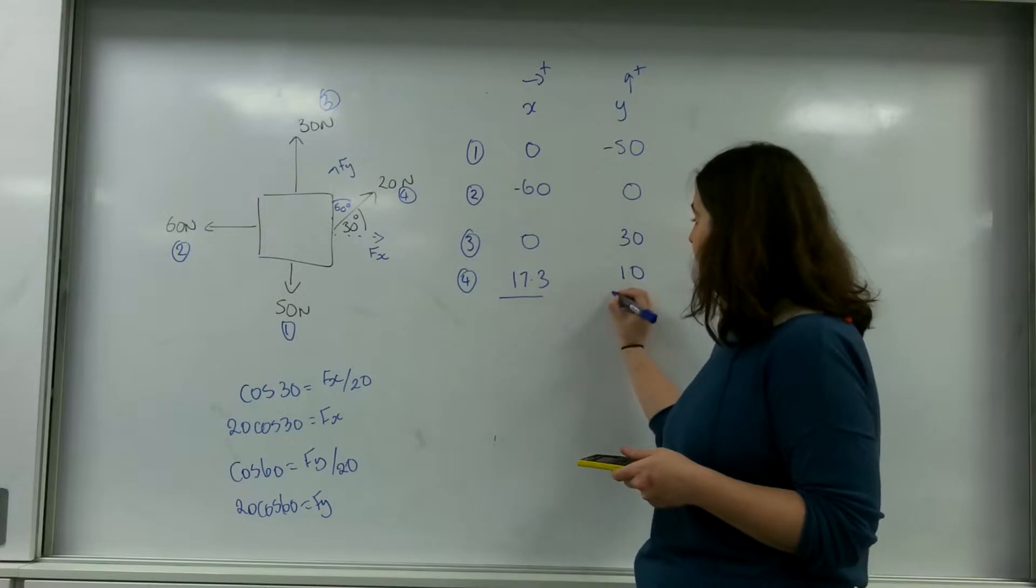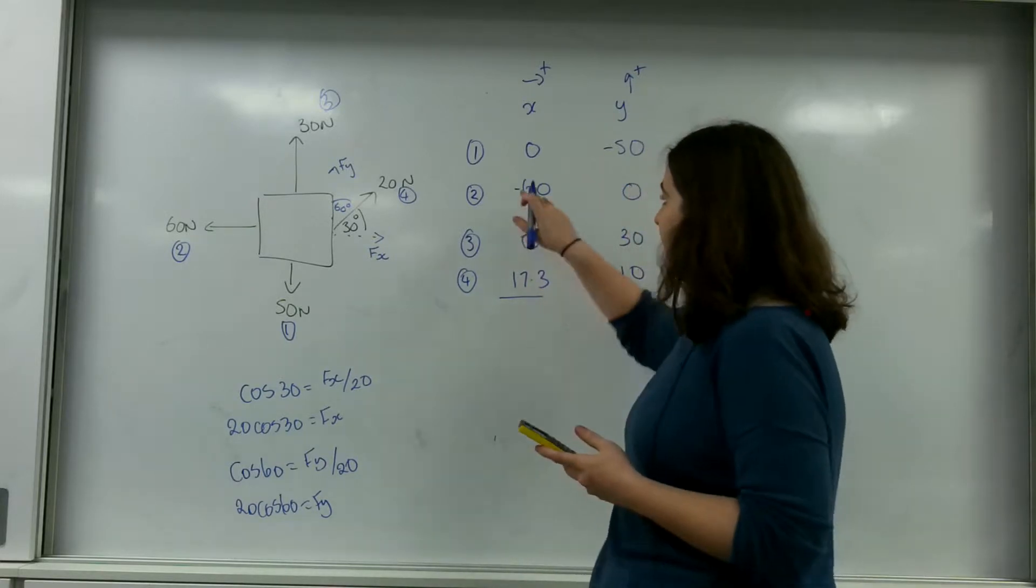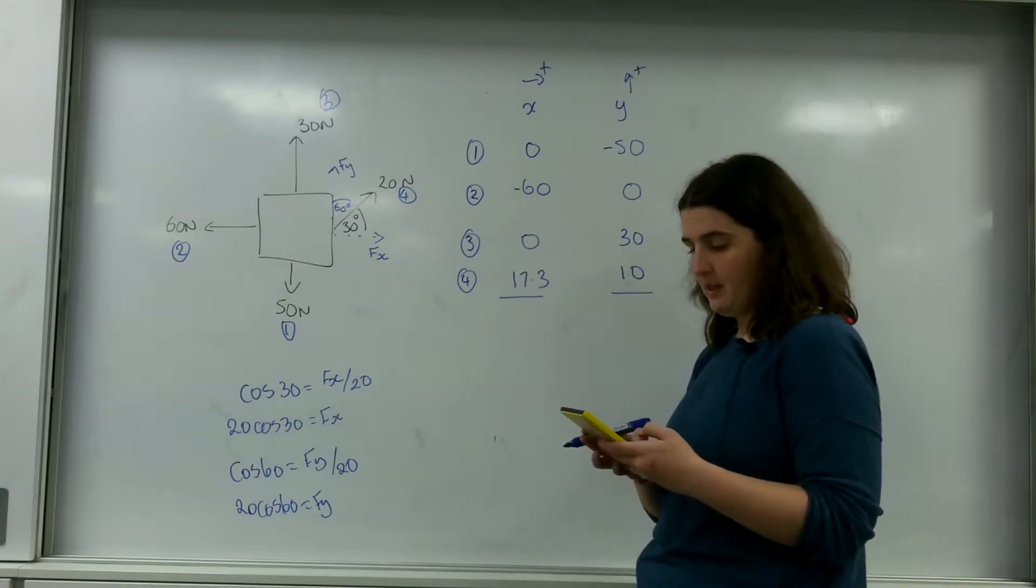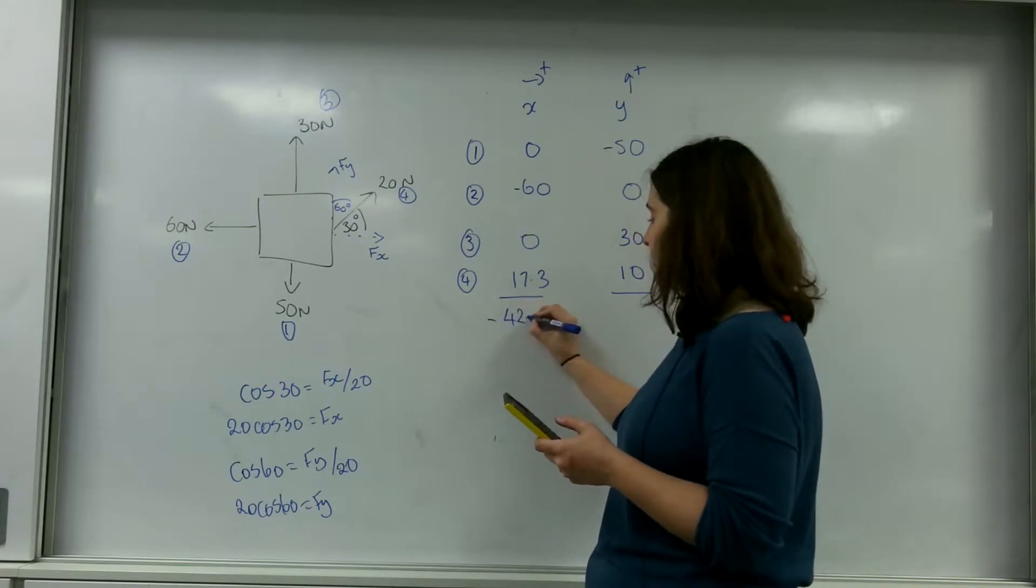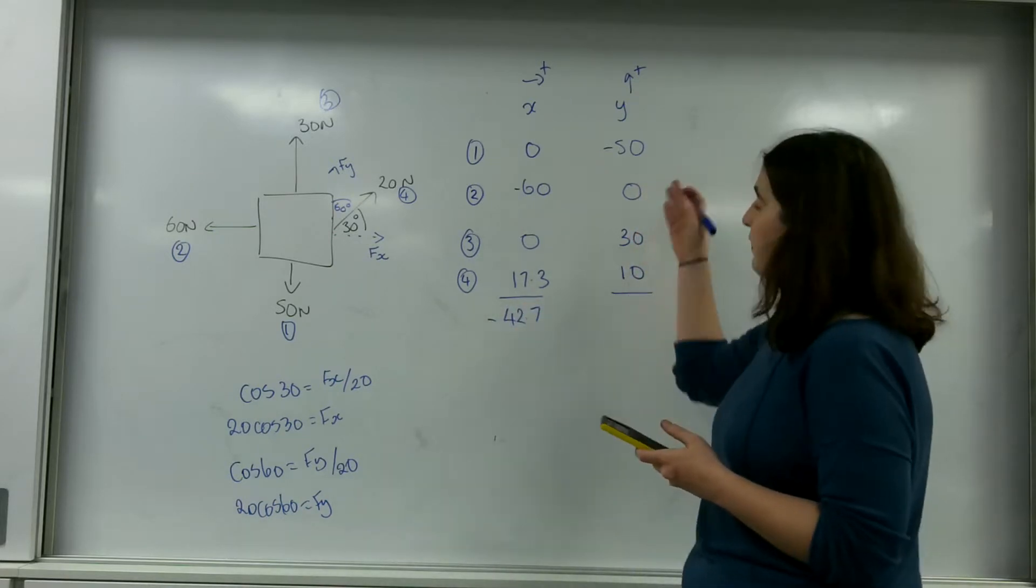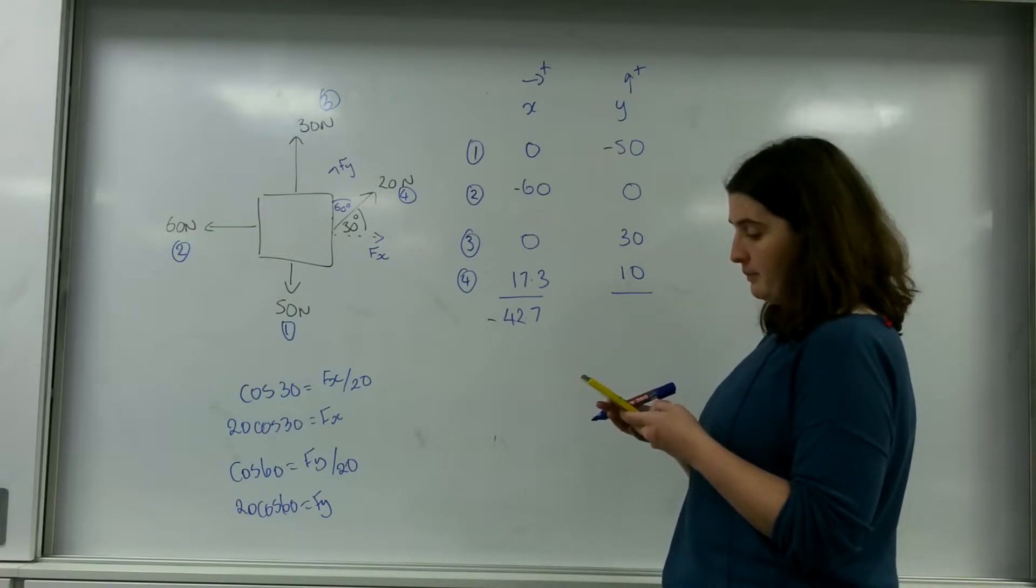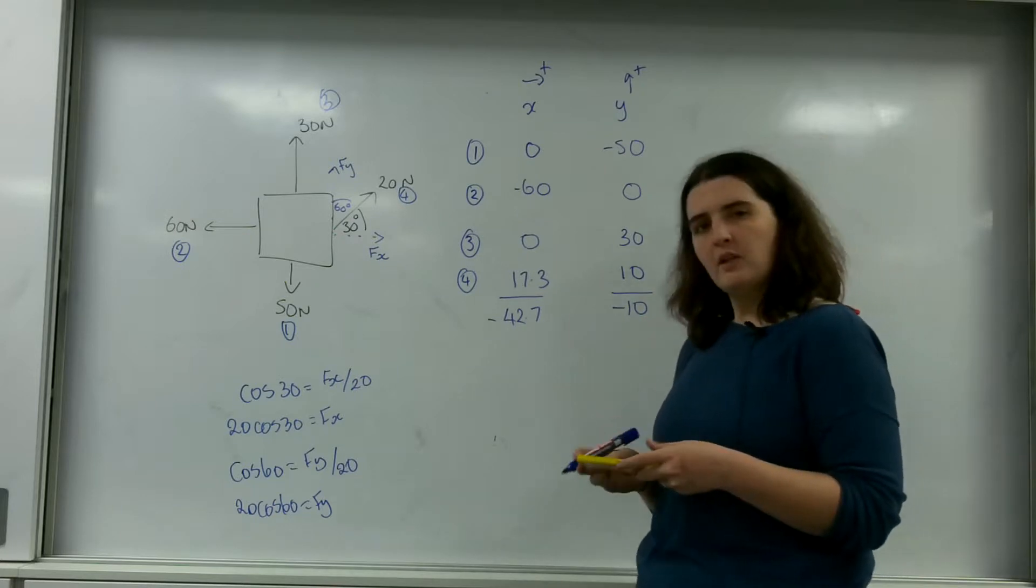I'm now going to add these together. So minus 60 plus 17.3 is minus 42.7, and this one is minus 50 plus 30 plus 10 which is minus 10.